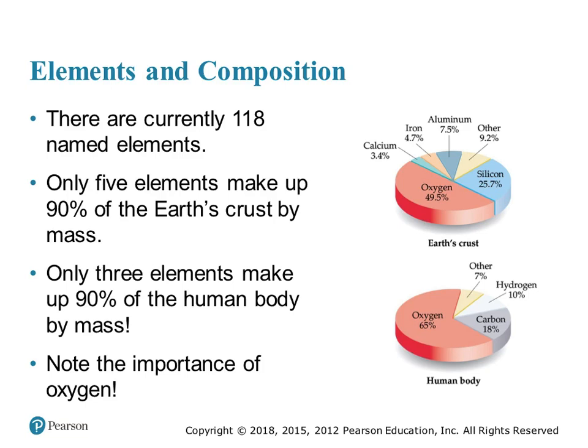There are currently 118 named elements on the periodic table. Only five elements make up 90% of the Earth's crust: oxygen, silicon, aluminum, iron, and calcium. Only three elements make up 90% of the human body: oxygen, carbon, and hydrogen. Note the importance of oxygen in both the Earth's crust and the human body — most people don't realize that the Earth's crust is almost 50% oxygen.